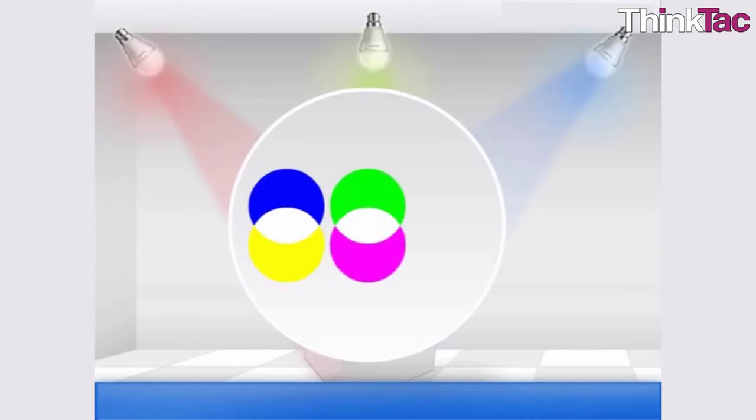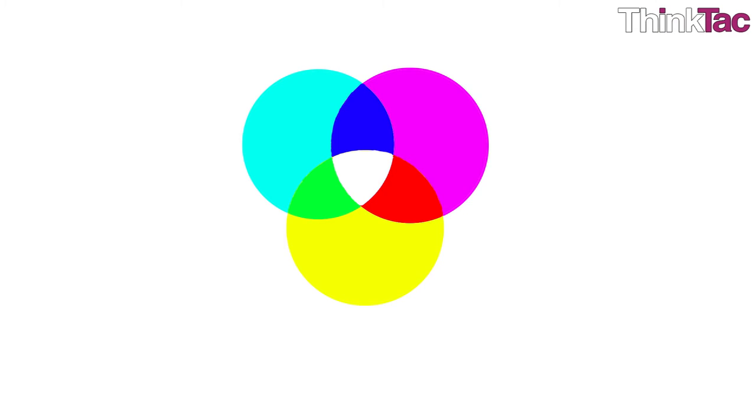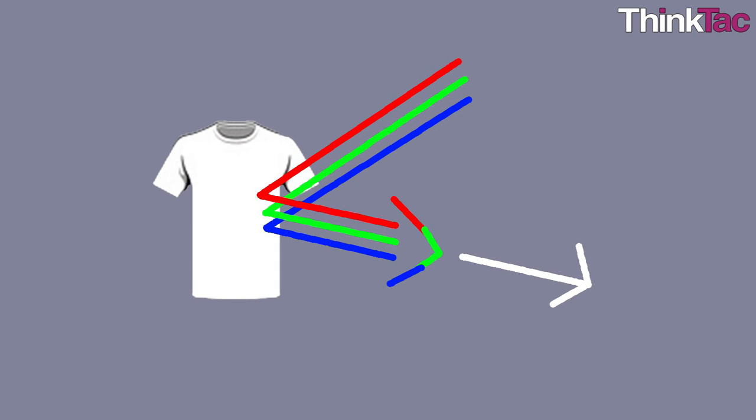In fact, you can also make white light by mixing these secondary colors: cyan, magenta, and yellow. Now that we understand primary colors, let's assume that white light is shining on a shirt. This would mean that red, green, and blue light are shining on the shirt. If the shirt is made of a material that absorbs blue light, then the three colors wouldn't be reflected, only two of them would be: red and green.